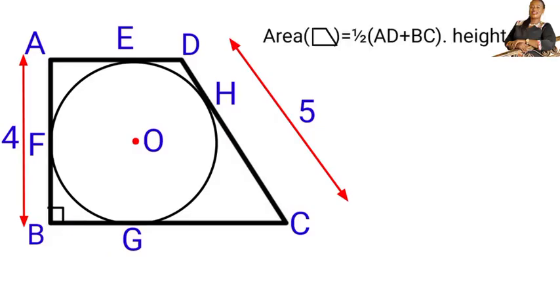Now, solution. Area of a trapezoid is half times the sum of the two bases times height. In our case, our bases are AD and BC, and we are not given the length of AD and BC, so we have to find out the length of the bases by ourselves.